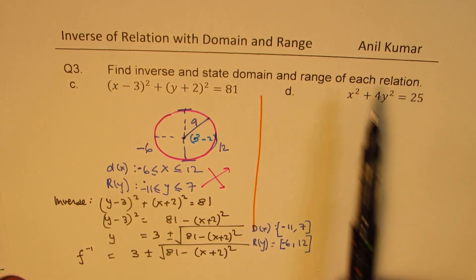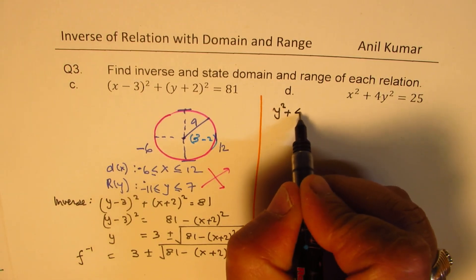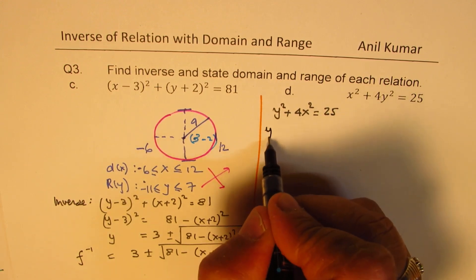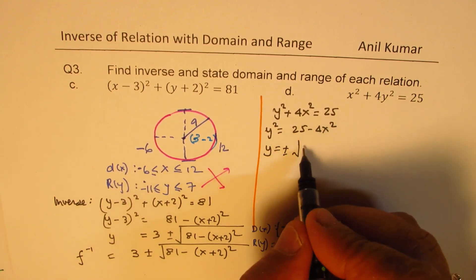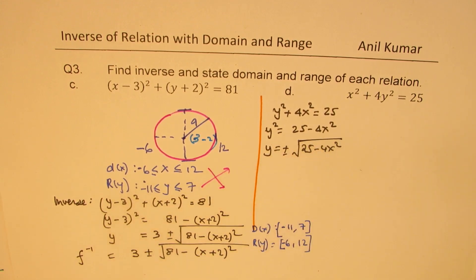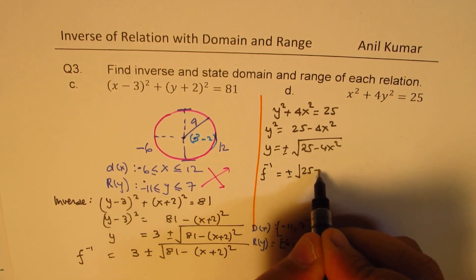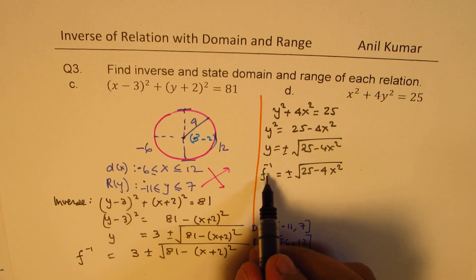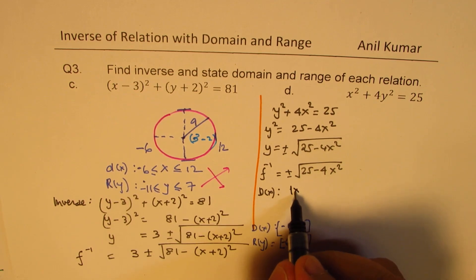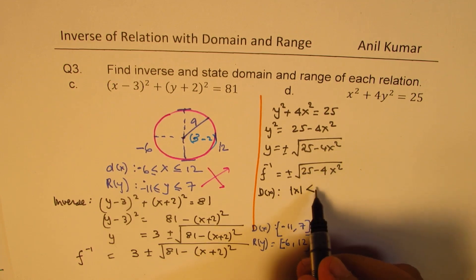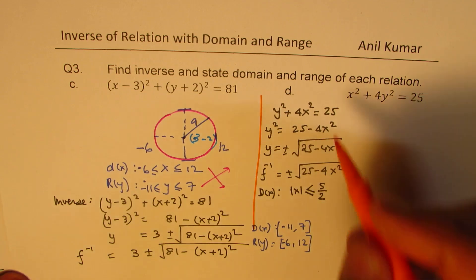The last question is x squared plus 4y squared equals to 24. Let's find the inverse first. We swap and write y squared plus 4x squared equals to 24. So y squared equals to 24 minus 4x squared, and y equals plus or minus square root of 24 minus 4x squared. For the inverse, the domain requires that the absolute value of x must be less than or equal to the square root of 24 over 4, which simplifies accordingly. That becomes the domain of the inverse.